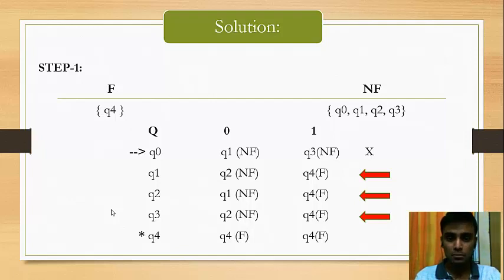Now, in the given table, we will denote every state by F and NF. As you can see that the first state Q0 is having a pattern of NF-NF whereas Q1, Q2 and Q3 have a pattern of NF-F. So that means Q0 has a different pattern compared to its other members Q1, Q2 and Q3. So we will divide Q0 from Q1, Q2 and Q3.